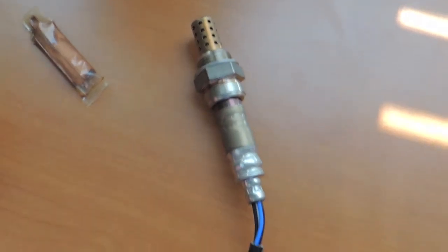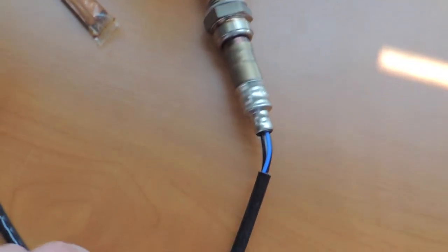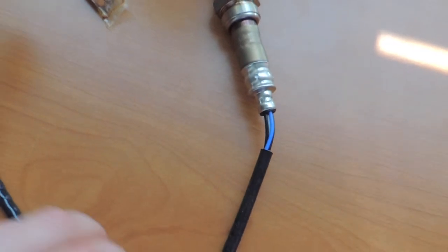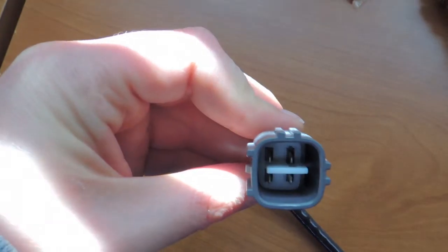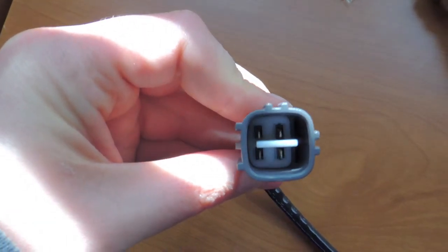This sensor has four wires. The two black ones are for the heater circuit. The sensor is more accurate at a constant temperature. The heater wires are connected to the 12-volt battery to warm up the sensor quickly during a cold start.